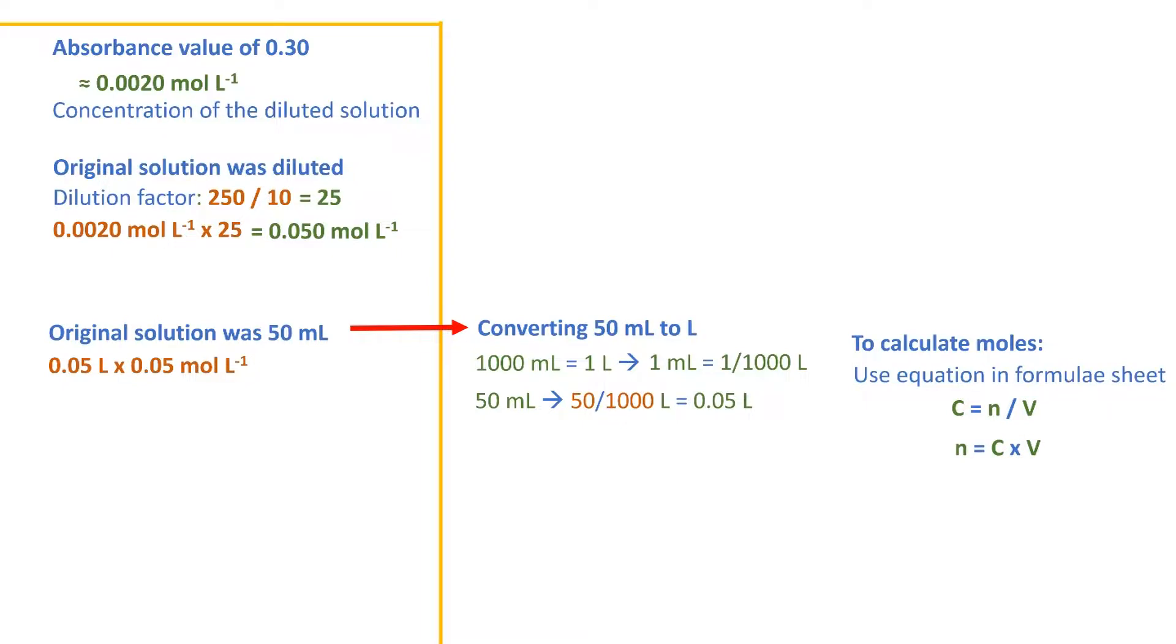Rearranging this equation enables us to determine an equation for the number of moles, done by multiplying each side by the volume. With the concentration of the solution being 0.05 moles per liter, and the volume 0.05 liters, we can multiply these two to get to the answer.